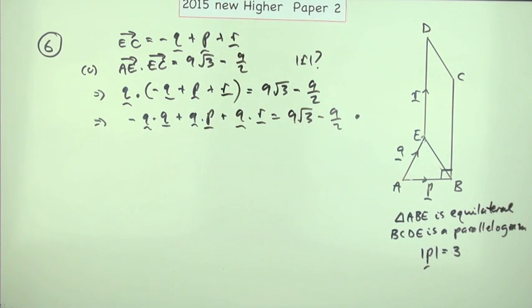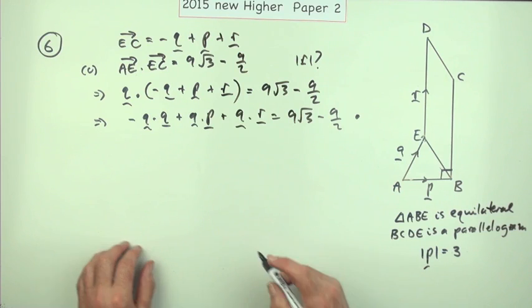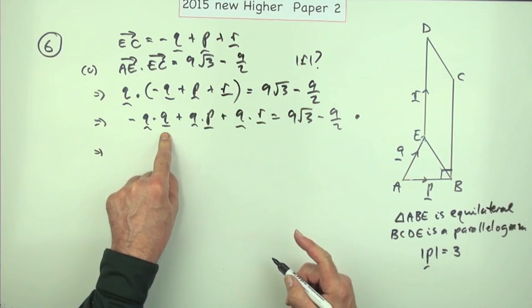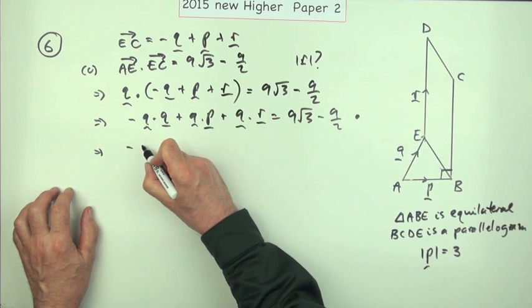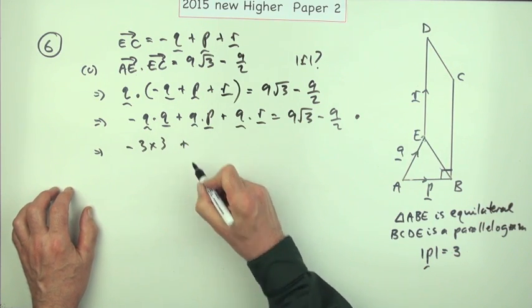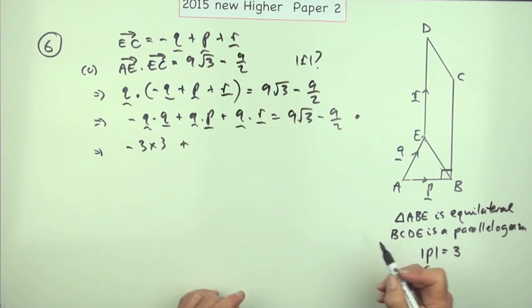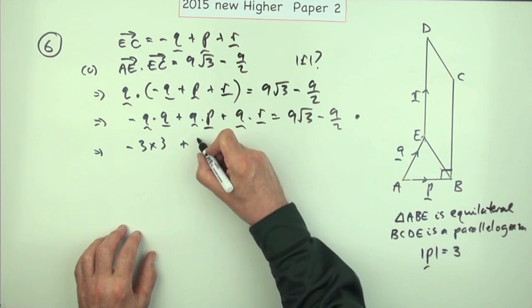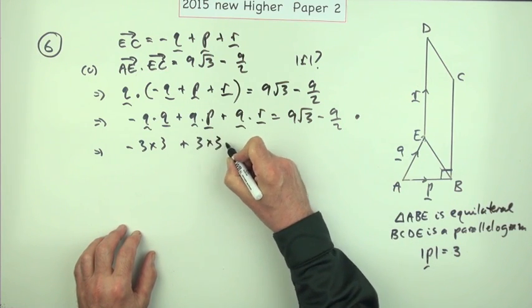Now the next mark it says is to start evaluating. Well q dot q is straightforward because it's a vector parallel to itself, so that'll be all of 3 times 3. q dot p you've already worked out, 3 times 3 times the cosine of 60, it was already worked out so I'll just put in the half because I've done that.